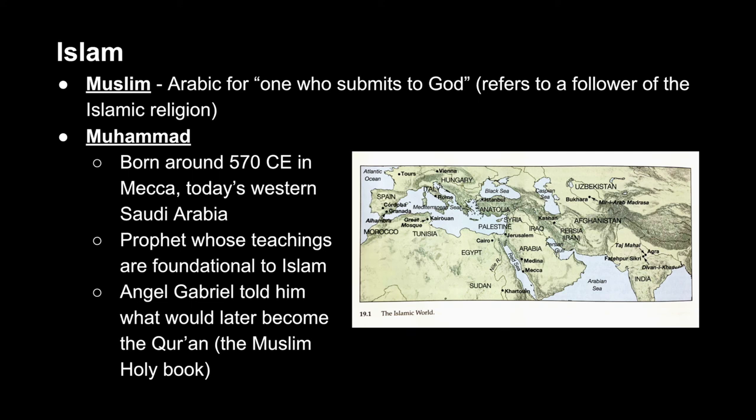Muslims believe that the angel Gabriel spoke to Muhammad and told him what would later become the Quran, which is the Muslim holy book said to be the only text with the true word of Allah. Allah literally means God — it's just the word used in Islam, not a separate type of God. It's the Arabic word for God, such that Arab Christians still use the same word.